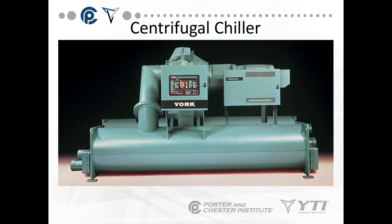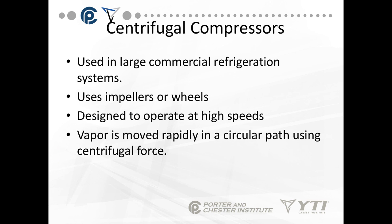This is an example of a centrifugal chiller — yet another type of compressor. It's used in large commercial systems and uses impellers and wheels. It operates at an extremely high speed. Vapors move rapidly in a circular path using centrifugal force — that force that, if you spin something very rapidly, is going to push it in an outward direction.